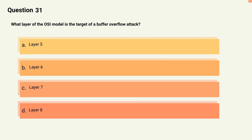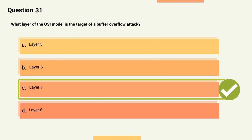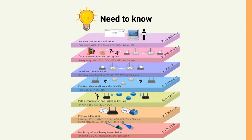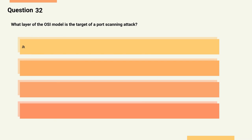Question 31: What layer of the OSI model is the target of a buffer overflow attack? Options: A) Layer 5, B) Layer 6, C) Layer 7, D) Layer 8. The correct answer is Option C, Layer 7. Explanation: A buffer overflow attack is a type of attack that targets the application layer, Layer 7, of the OSI model by sending more data to a program or service than it can handle, causing it to crash or execute arbitrary code.